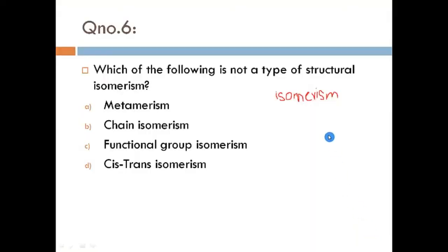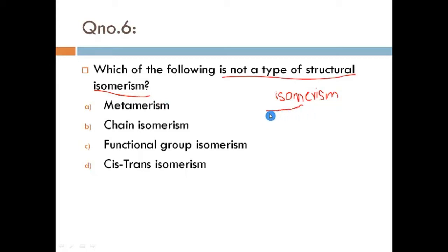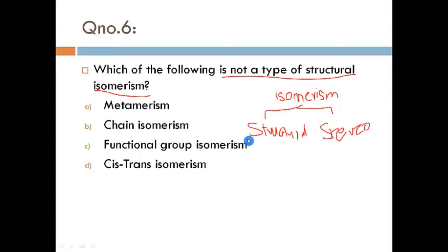Our question is: which of the following is NOT a type of structural isomerism? As we know, isomerism has two types: number one is structural isomerism, and number two is stereo isomerism. Now structural isomerism has further divisions.